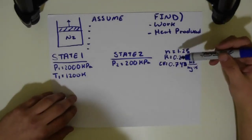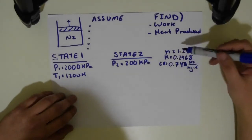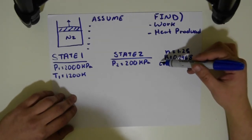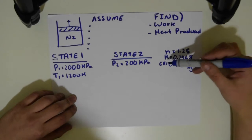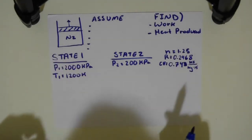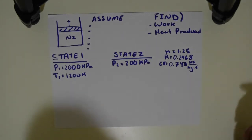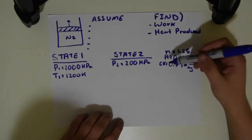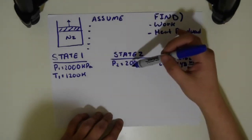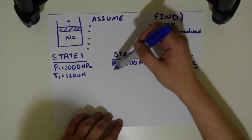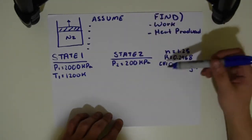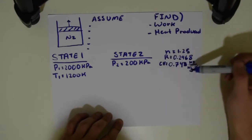I took the liberty of getting this R and CV value. The CV value was taken from the book at room temperature. I know it's usually better, if you're assuming constant specific heats, to take this at the average temperature — T1 plus T2 divided by 2 — but I don't have a T2, and that would make things rough. So I'm going to assume CV at room temperature.